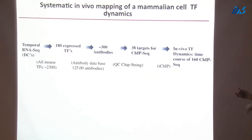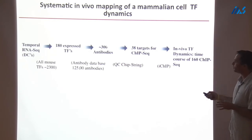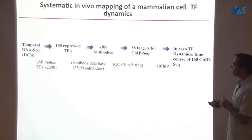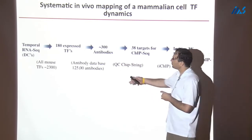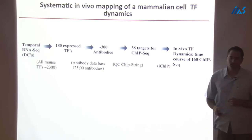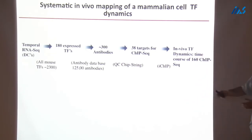In this study, we used temporal RNA sequencing to identify expressed transcription factors — about 180 in these cell types above some threshold. We took every commercially available antibody for these factors, which explains why you actually need a high-throughput approach. Of these, only 38 really worked well in ChIP sequencing with good enrichments. For these 38 factors, we performed an in vivo time course of ChIP, generating 160 different ChIP-seq libraries in total. This was done by one technician across three months.